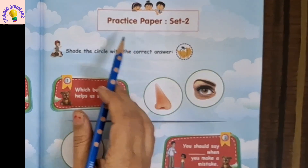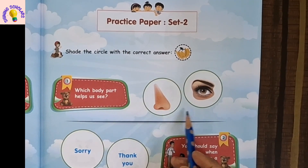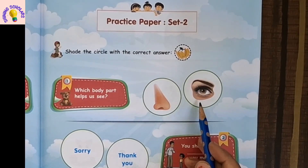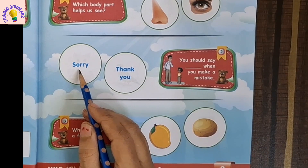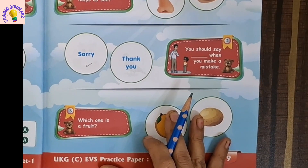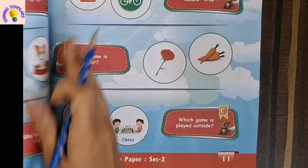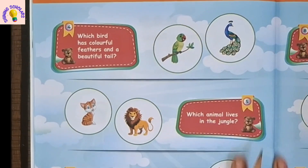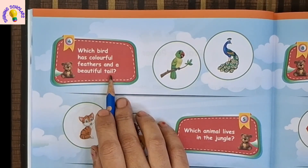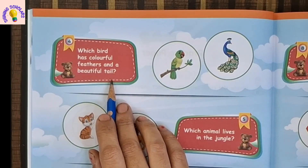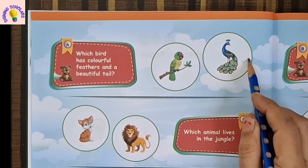Next sample paper: which body part helps us to see — nose or eyes? These are eyes. You should say 'sorry' when you make a mistake. Which one is a fruit — mango or potato? Mango. Next question: which bird has colorful feathers and a beautiful tail? It should be peacock, not parrot.